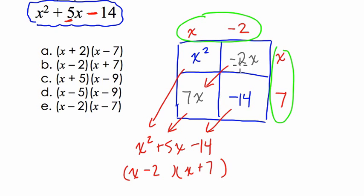And again, you can see that we have to add negative 2x and 7x to get 5x here in the middle. In other words, the two factors that multiply negative 14 have to also add to 5. So here the answer is you have all these choices. You can see it's choice B here. Hope that helped.